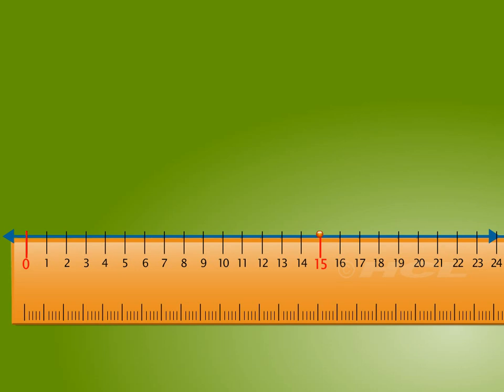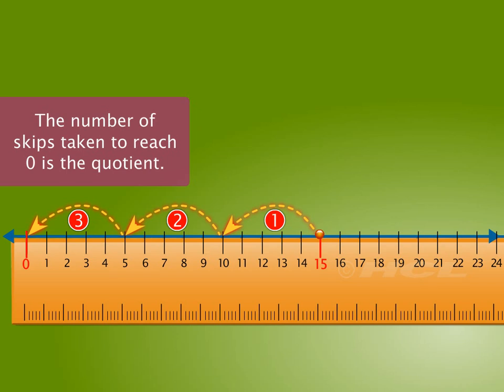One skip by 5 backwards from 15 brings us to 10. Second skip by 5 backwards from 10 brings us to 5. And the third skip by 5 backwards from 5 brings us to 0. The number of skips taken to reach 0 from the dividend is our answer.